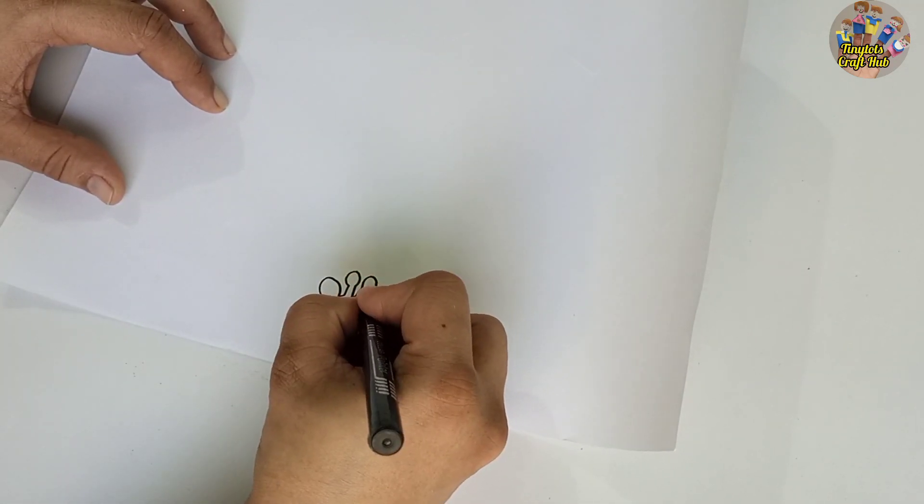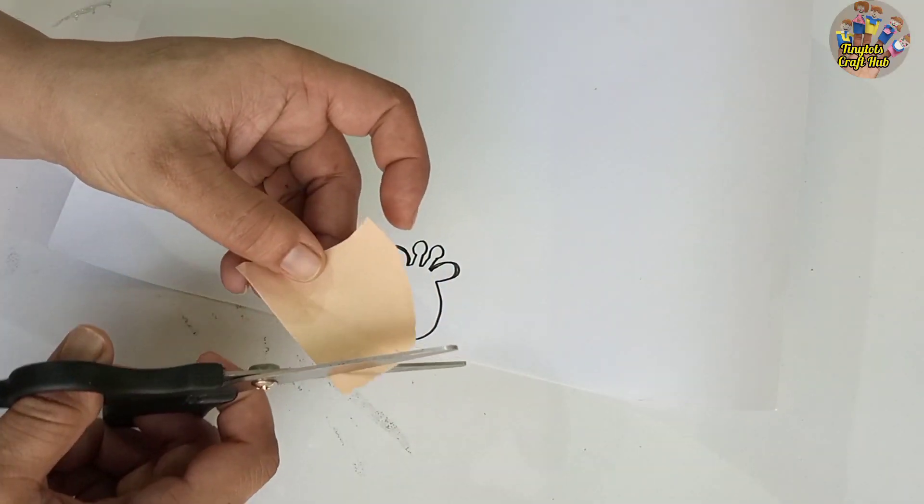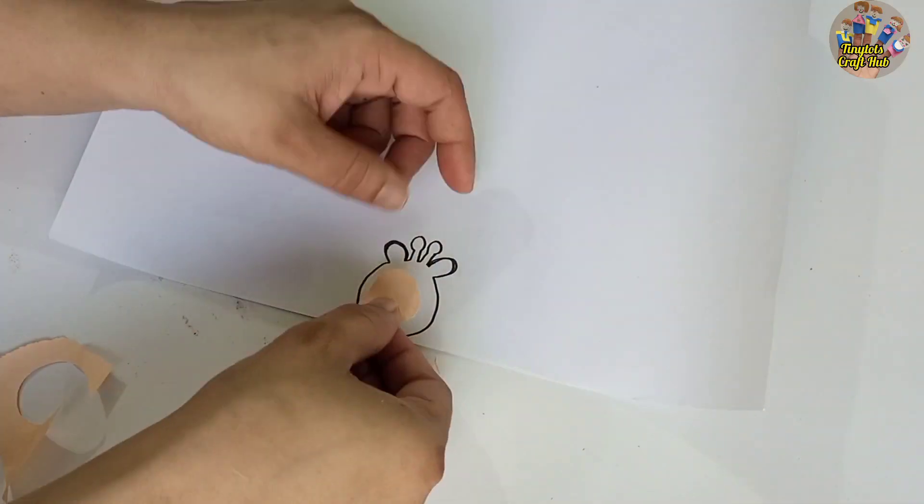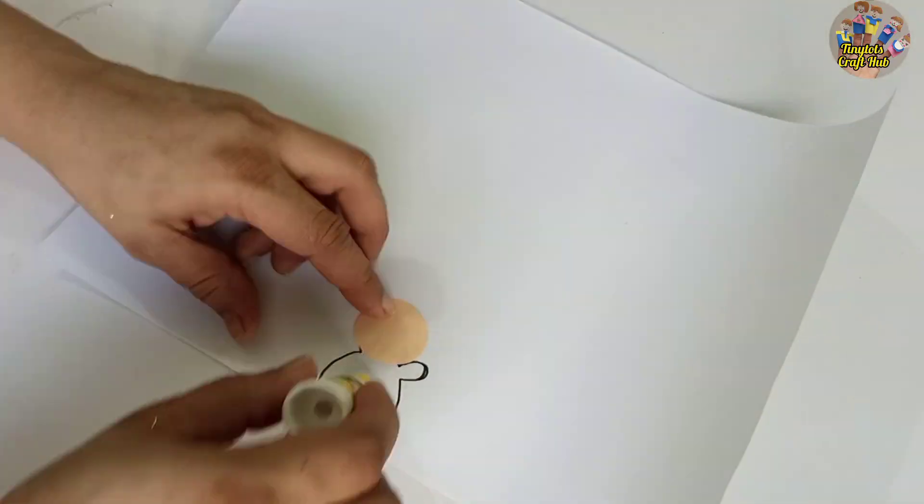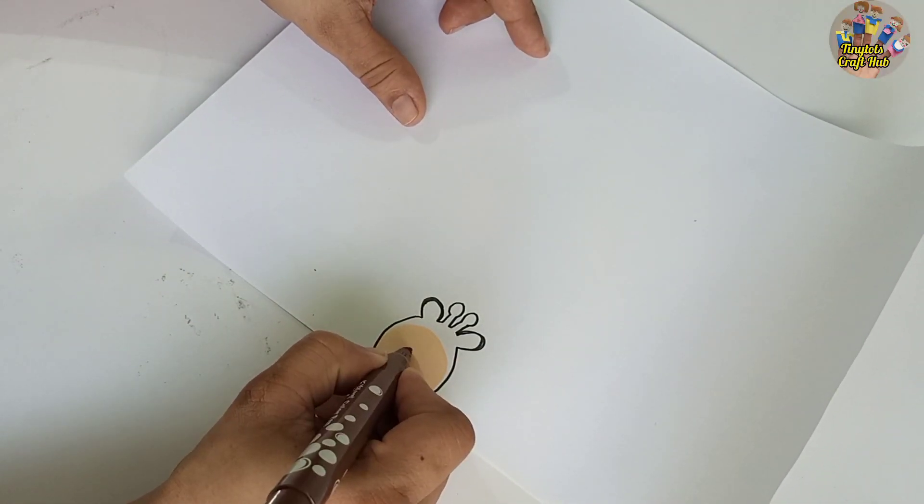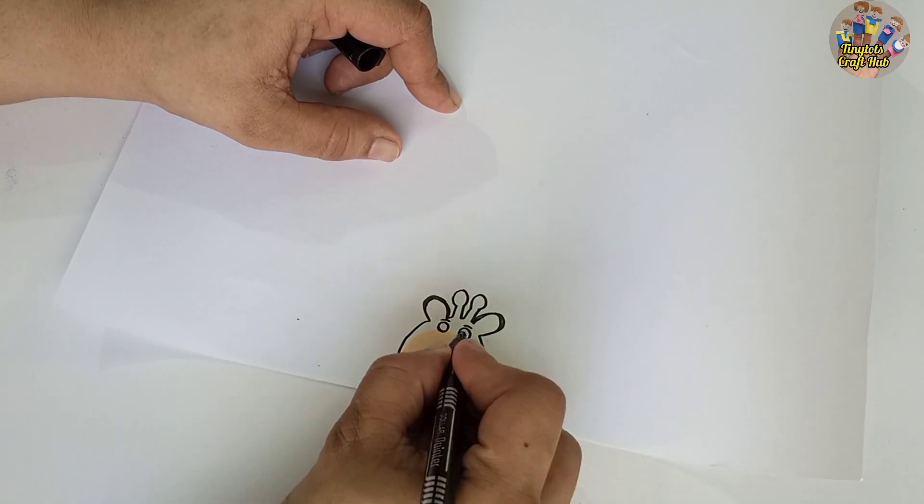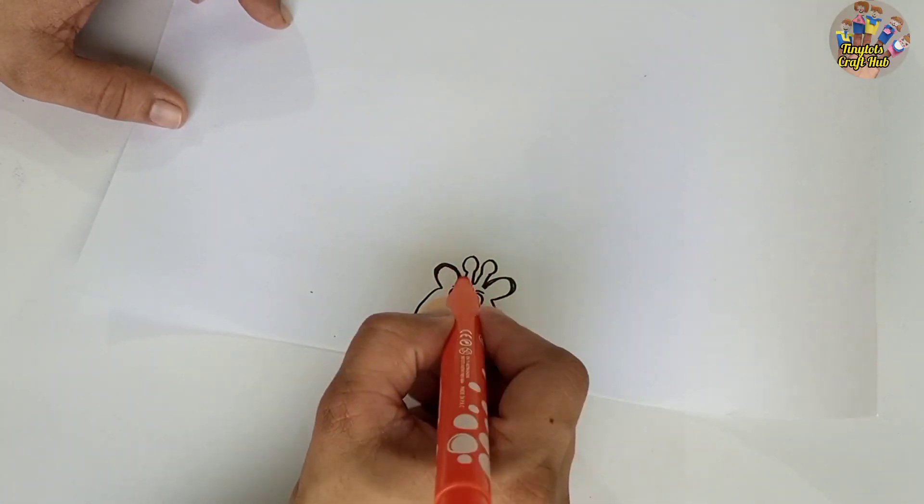So let's make it. We will take an A4 size white page and we will draw the head of the giraffe like this with the black pointer. First we will draw the head of the giraffe and we will also take the skin color paper for making the face. So you will take brown marker and black pointer for making eyes and the body of this giraffe.